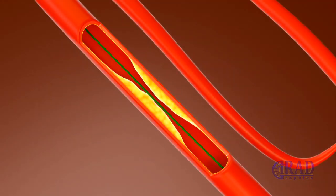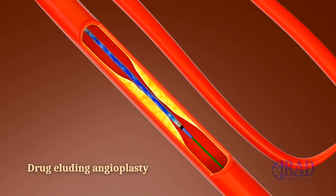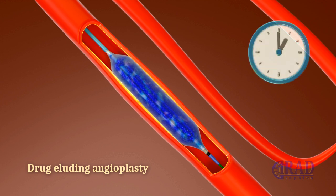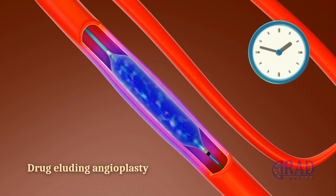Drug-eluting balloon angioplasty: in some cases, a drug-eluting balloon is preferred. The balloon is advanced over the wire to the narrowed area, and angioplasty is performed. The balloon is typically kept inflated for a few minutes to allow the drug to penetrate the vessel wall.